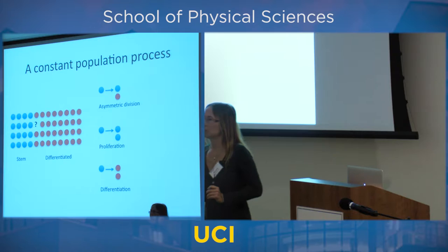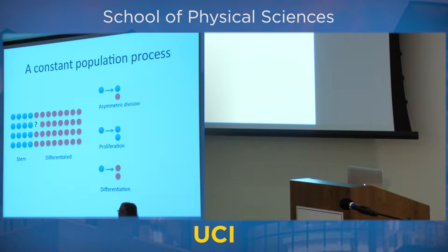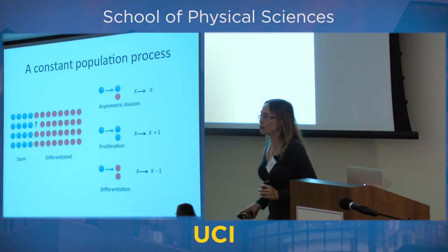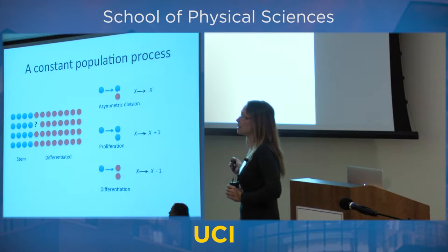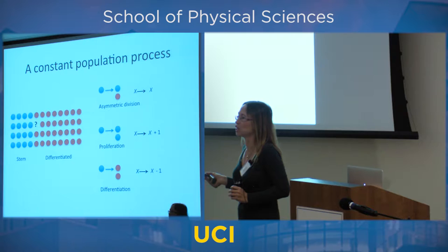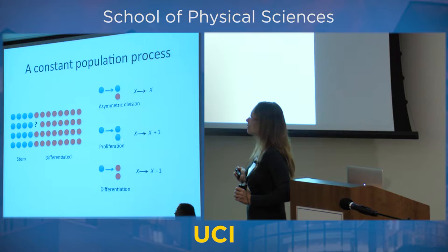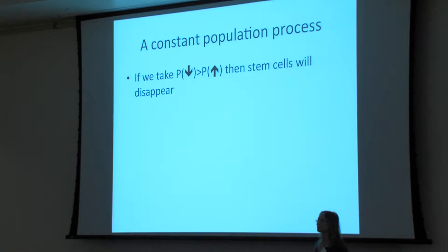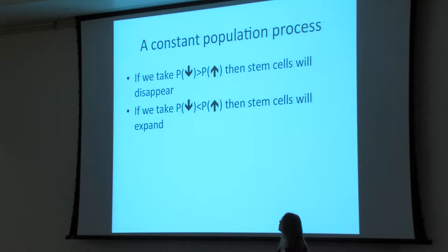These three processes work as follows: in asymmetric division, if you have X stem cells, you still have X afterward. In proliferation, X goes to X plus 1 — an extra stem cell is created. In differentiation, X goes to X minus 1 — a stem cell is lost. We can assign probabilities to these events. If the probability to decrease the number of stem cells is greater than to increase it, stem cells disappear. If the other way around, they expand out of proportion.